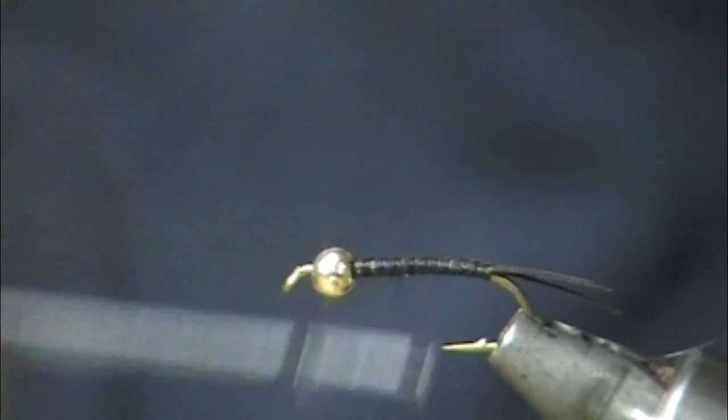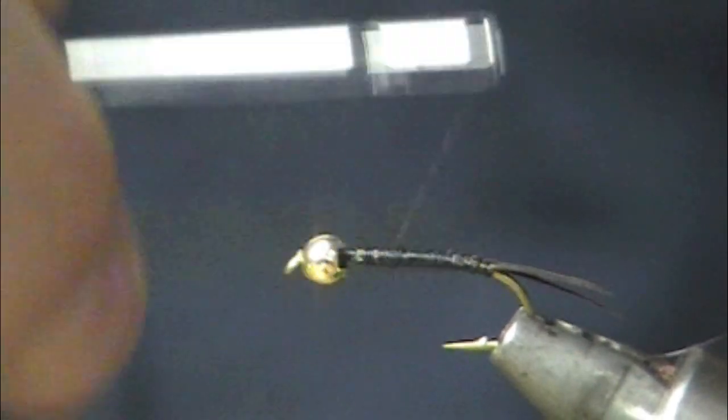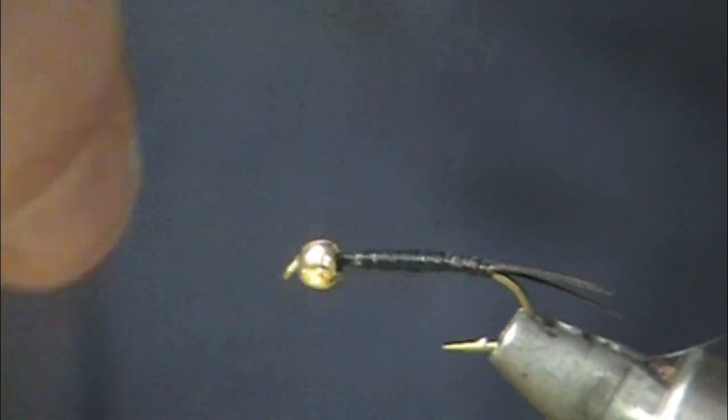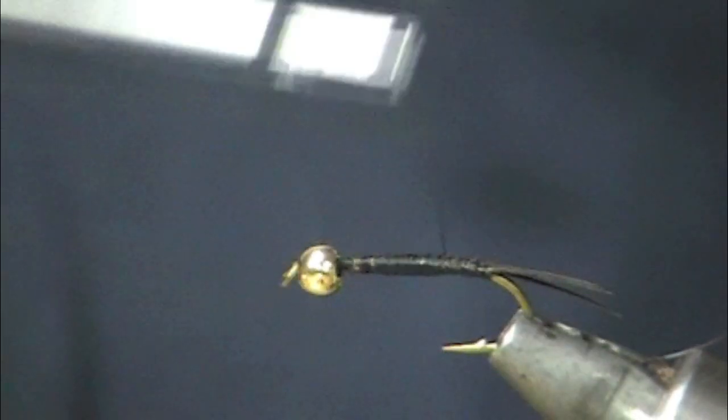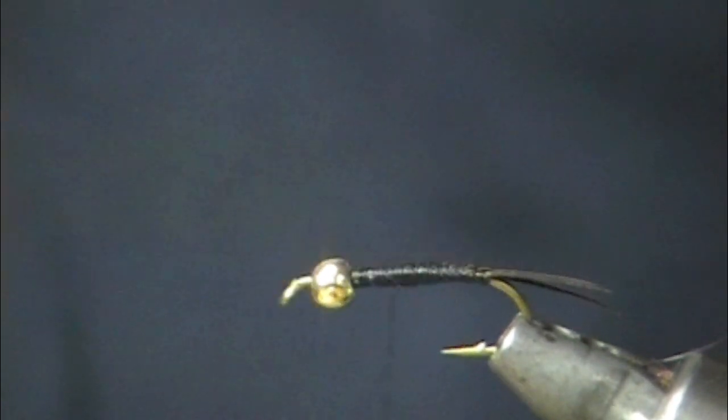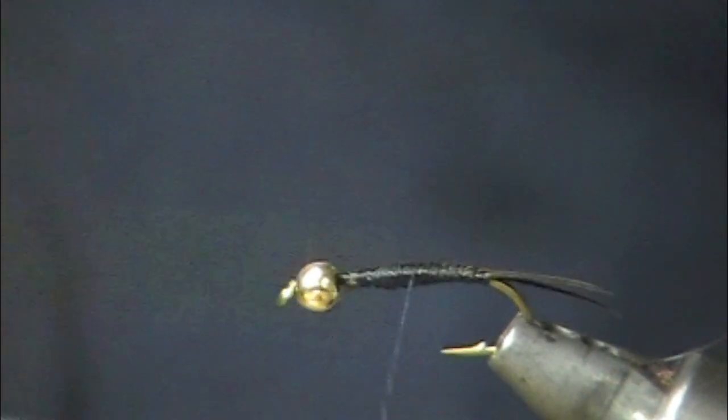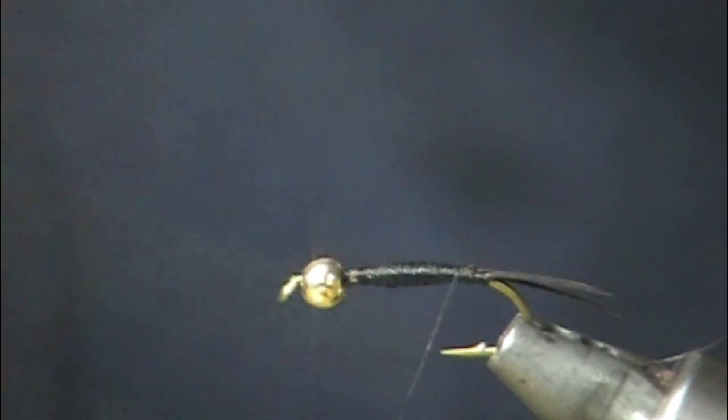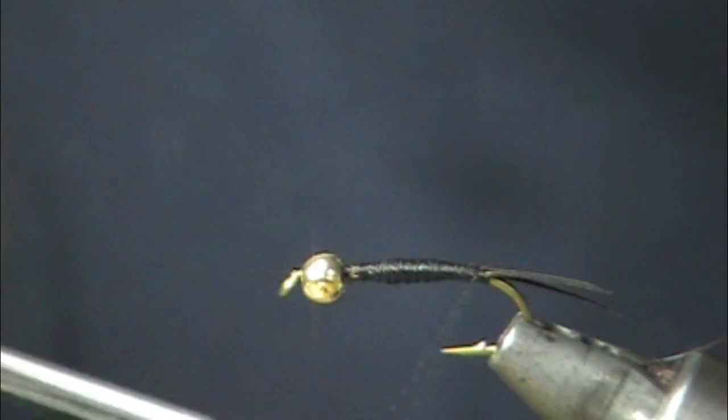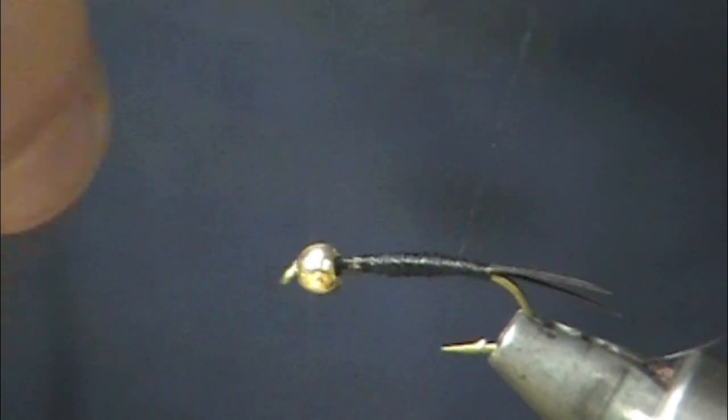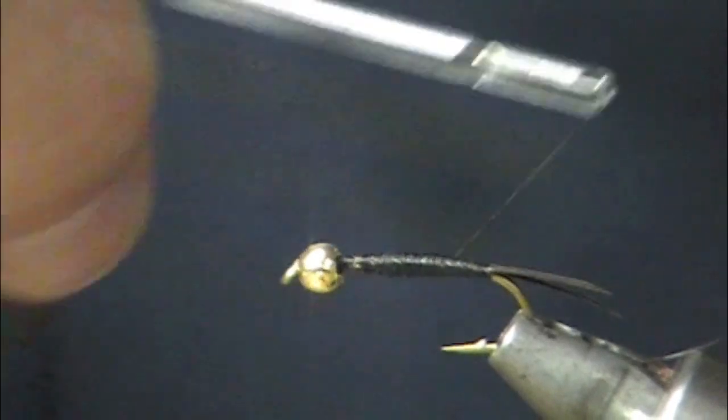So what I'm going to do now is I'm just going to spend a second or two winding some thread on here to help build up this tapered body. The wire itself would present a kind of a flatter body but what we're looking for is kind of that classic cigar shaped taper from tail to shoulder. Build that up a little bit, make a nice smooth transition there.